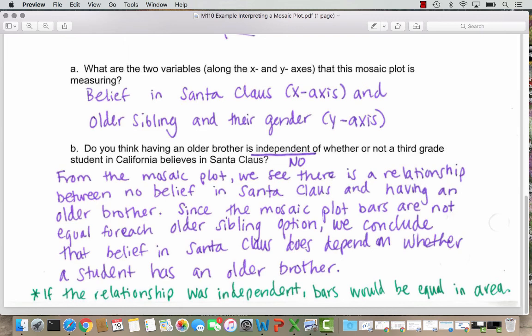So when we're asked to consider if a mosaic plot is independent or associated, we have to look to see is there approximately equal areas for all the groups analyzed or do we see different areas? If we do see different areas, we say it's an association, not an independent relationship.